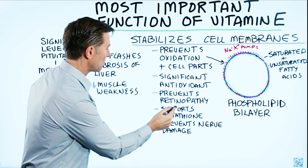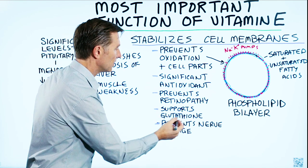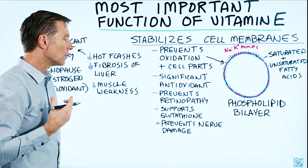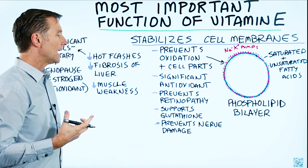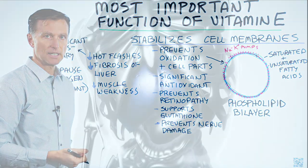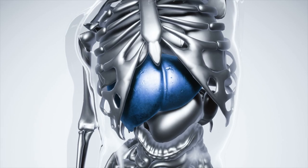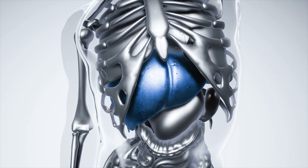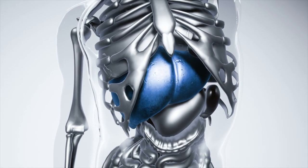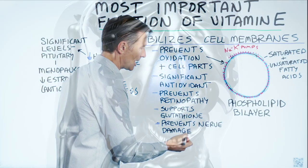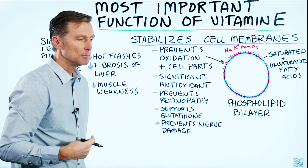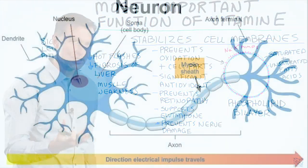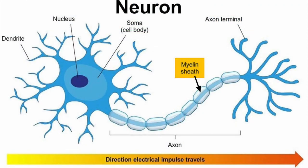Vitamin E also supports glutathione, which is the most powerful antioxidant in your body and mainly works in your liver. It also prevents nerve damage because of the myelin sheath, which is all fat.